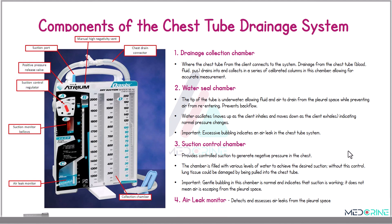The first component is a drainage collection chamber. This is where the chest tube from the client connects to the system. The drainage from the chest tube drains into and collects in a series of calibrated columns in this chamber to allow accurate measurement.